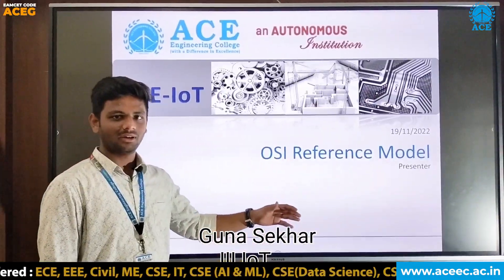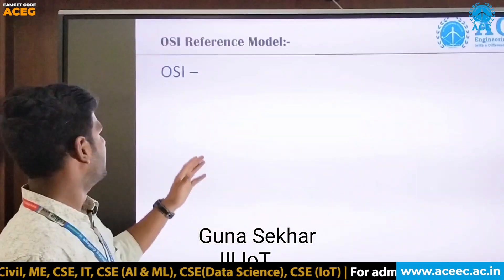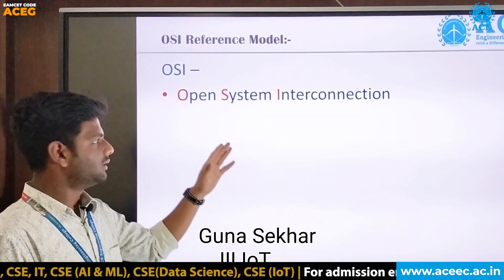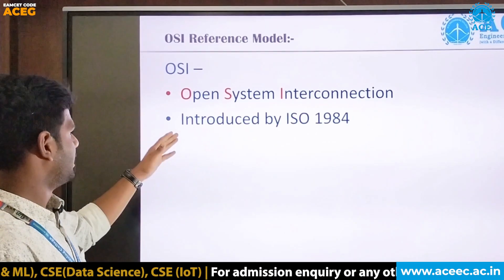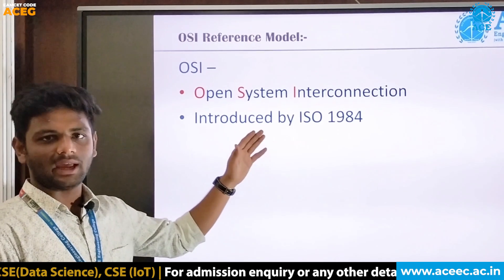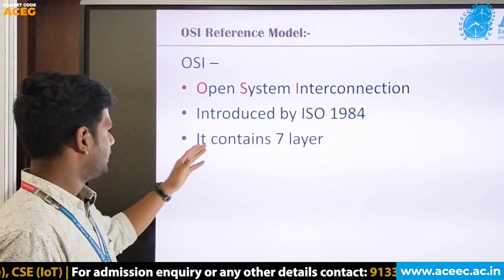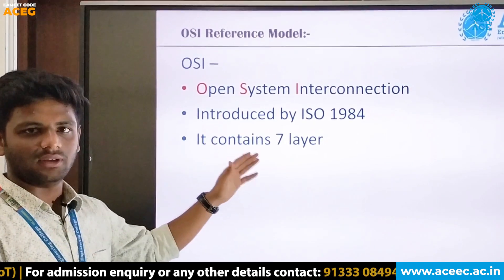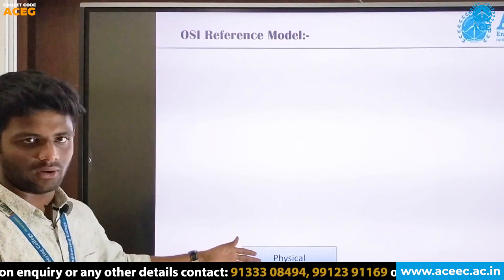Now I will explain the OSI model in the simplest way. OSI stands for Open System Interconnection. It was introduced by ISO in 1984. It consists of seven layers.